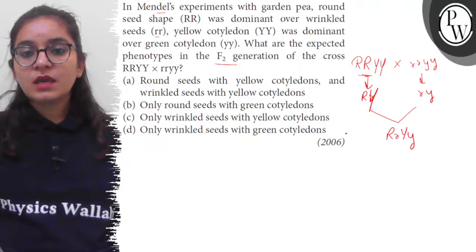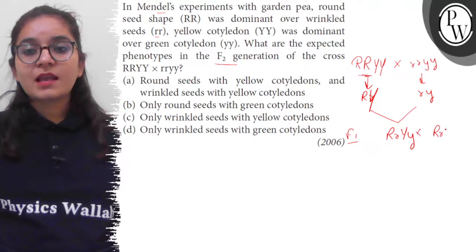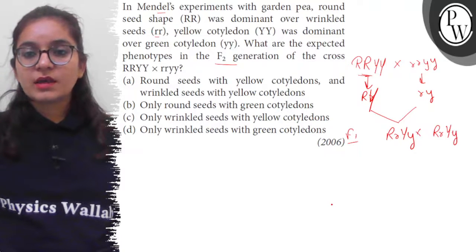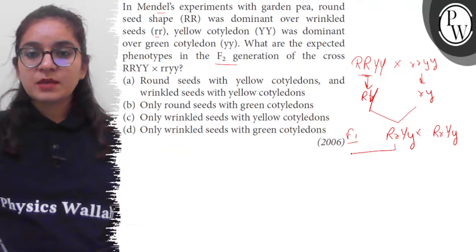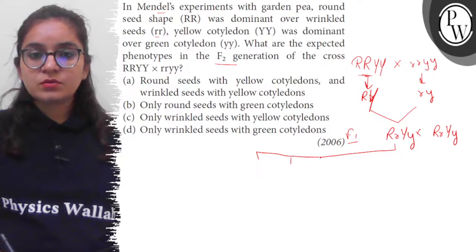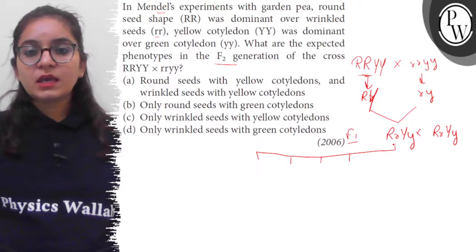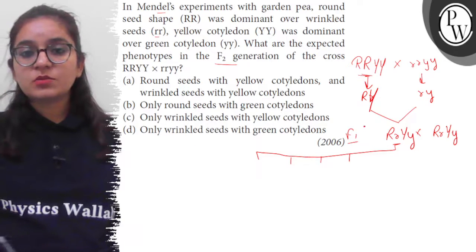This is F1 generation. In Mendel's experiment, what do we do in F1 generation? Self pollination. Now we will make gametes here: 1, 2, 3, 4. How did I know that 4 types of gametes are going to be made?